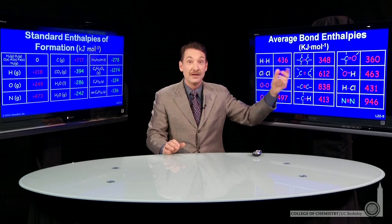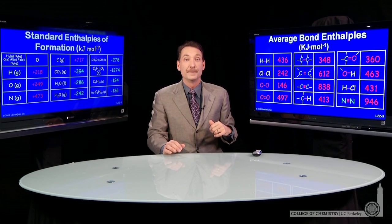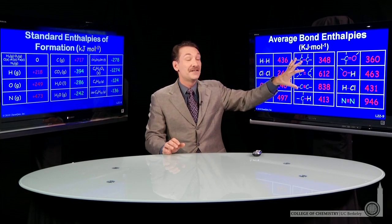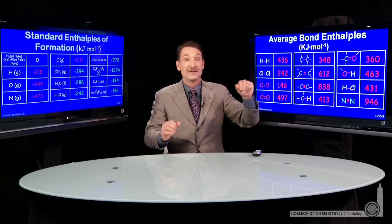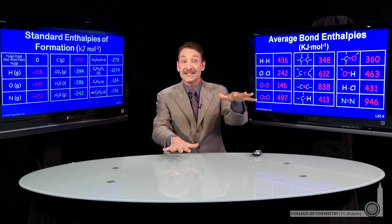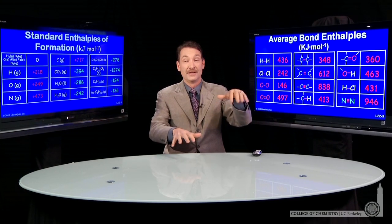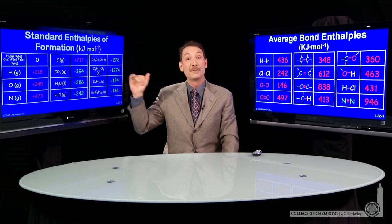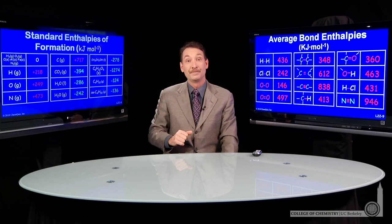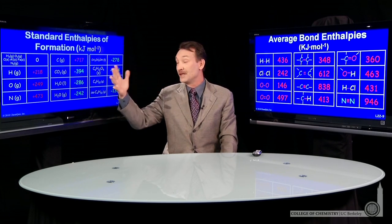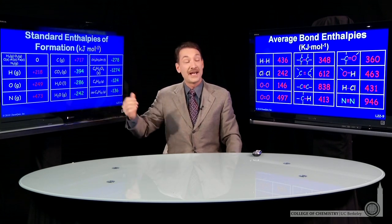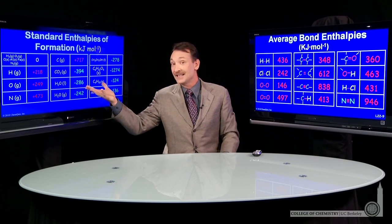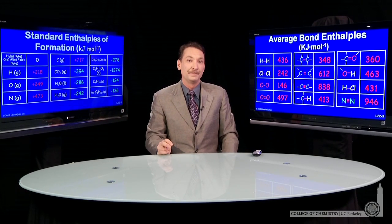That's the power of this method, but you do give up something. Remember, these are average bond enthalpies, so you're making an estimate of the enthalpy of reaction. If you use the standard enthalpies of formation, that would be exact. So it's a trade-off between a large table and a small table, exactness and an estimate.